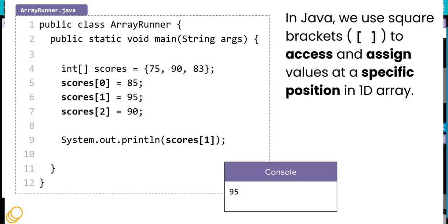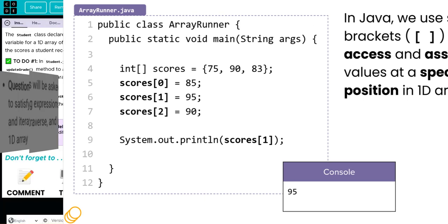The key takeaway from this lesson is how to access specific values in a 1D array. For that, we need the array name, square brackets, and within those brackets the index we want to call or modify. In my example, I'm instantiating a 1D array scores with an initializer list of 75, 90, 83. Remember we start counting at index 0. Then I'm changing index 0 to 85, index 1 to 95, and index 2 to 90. Printing position 1 now gives 95.